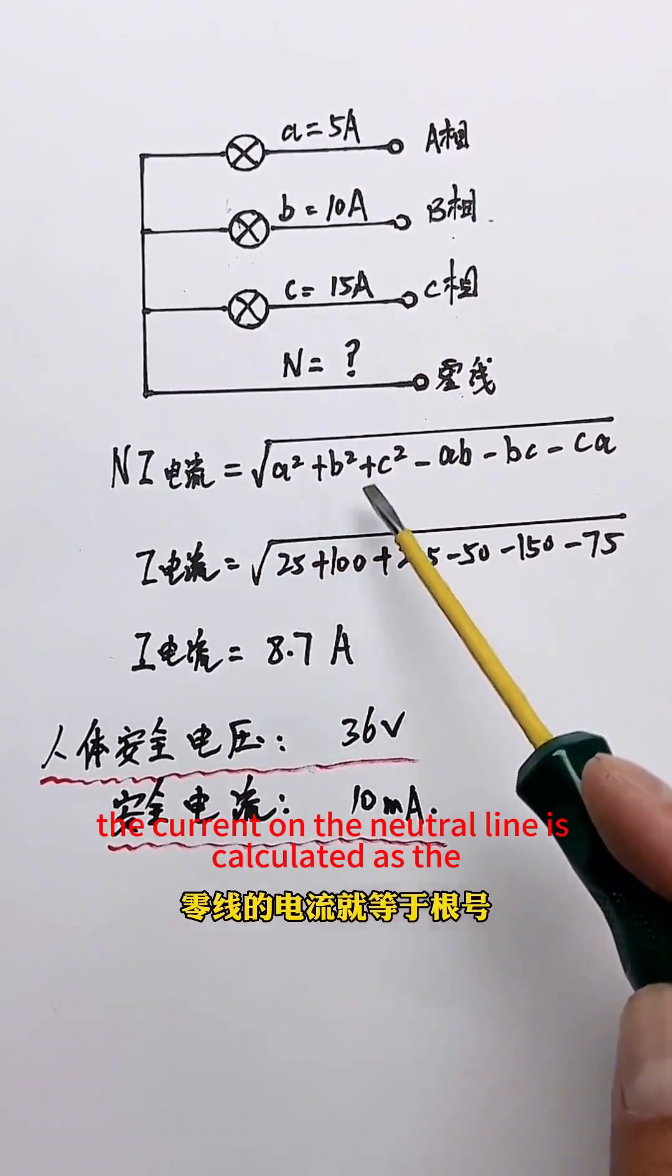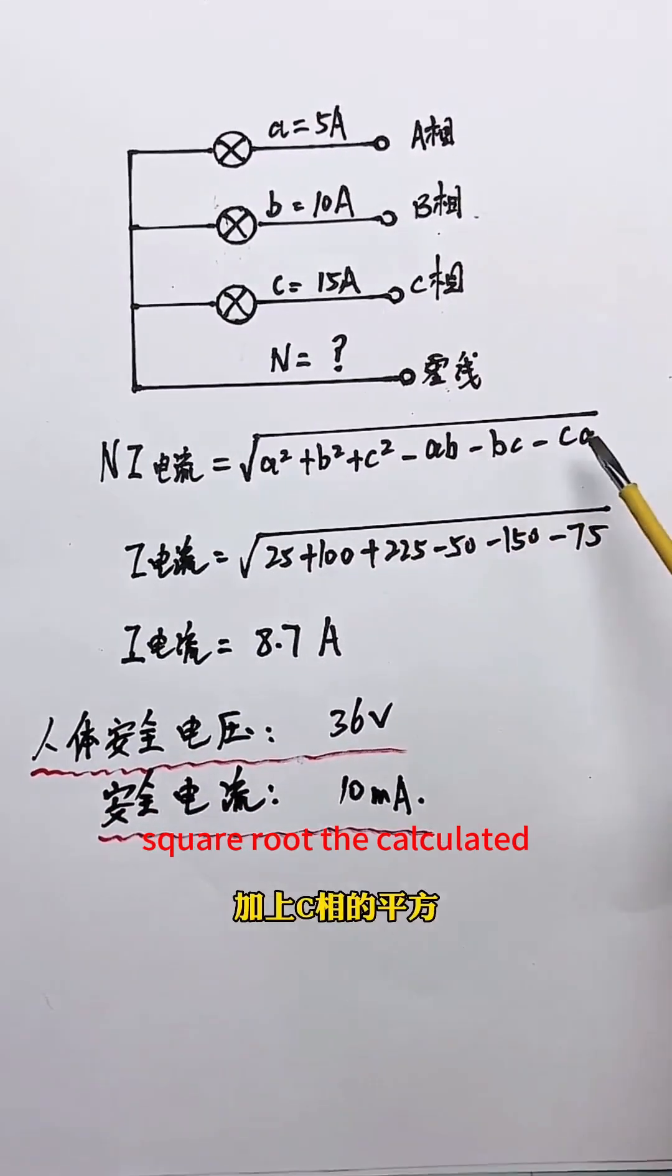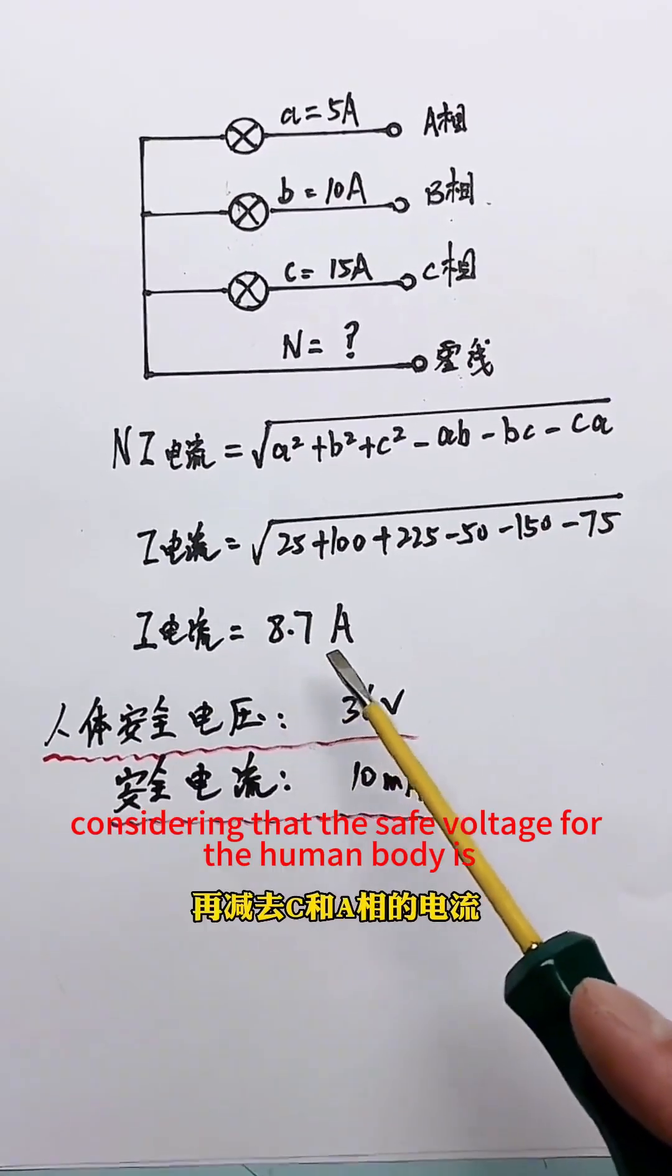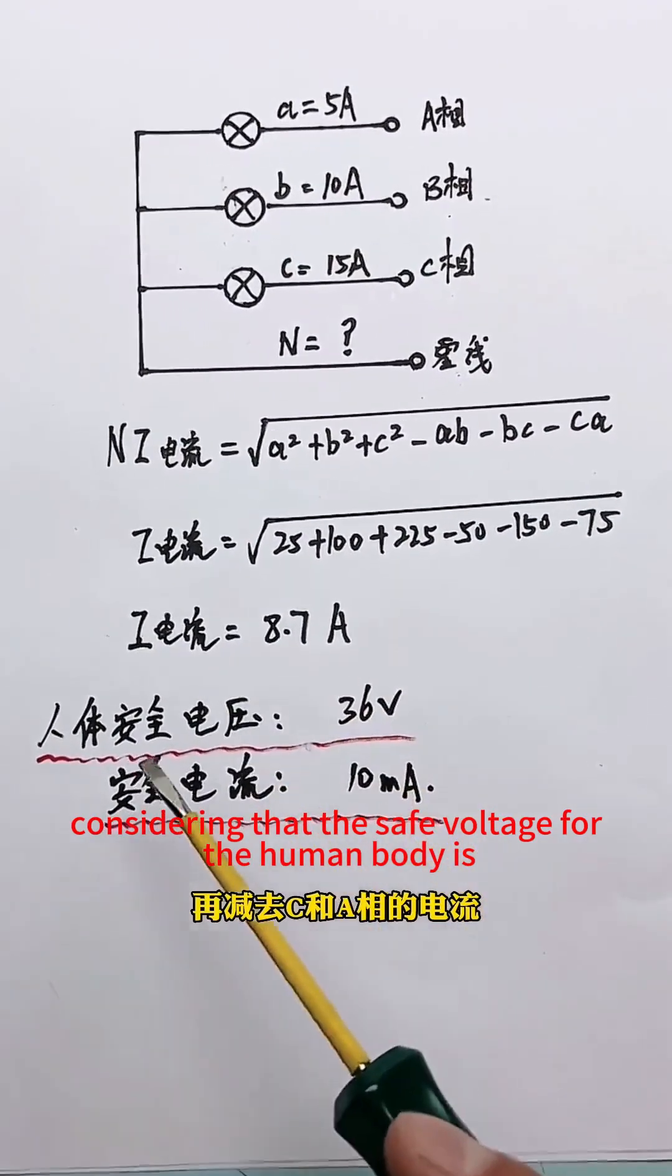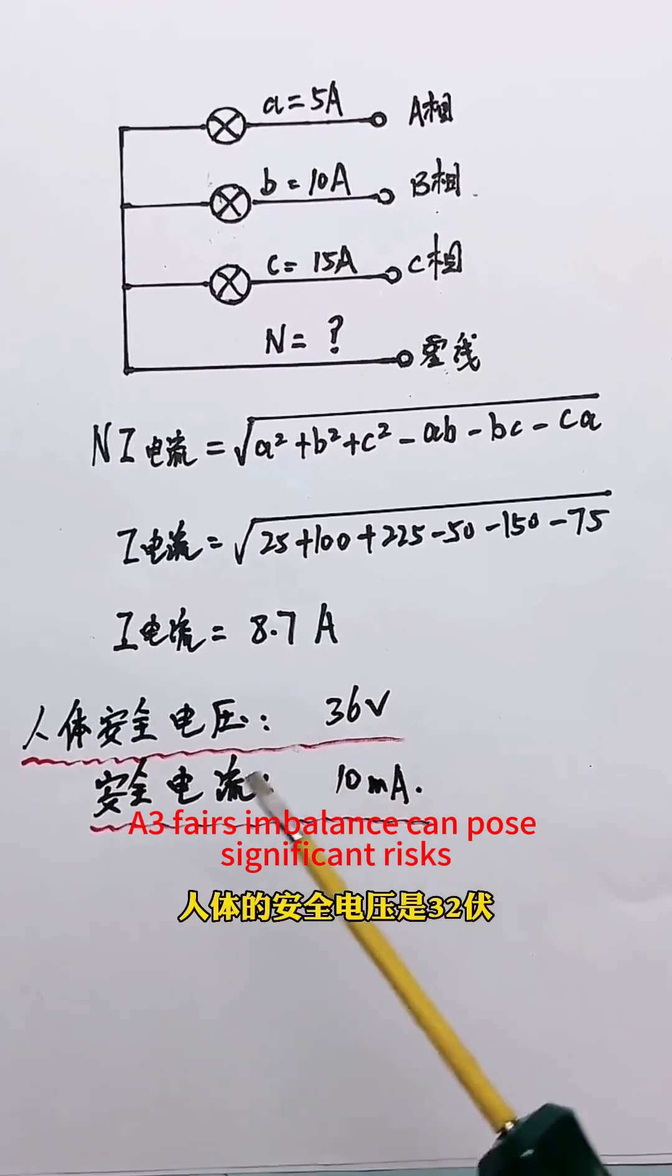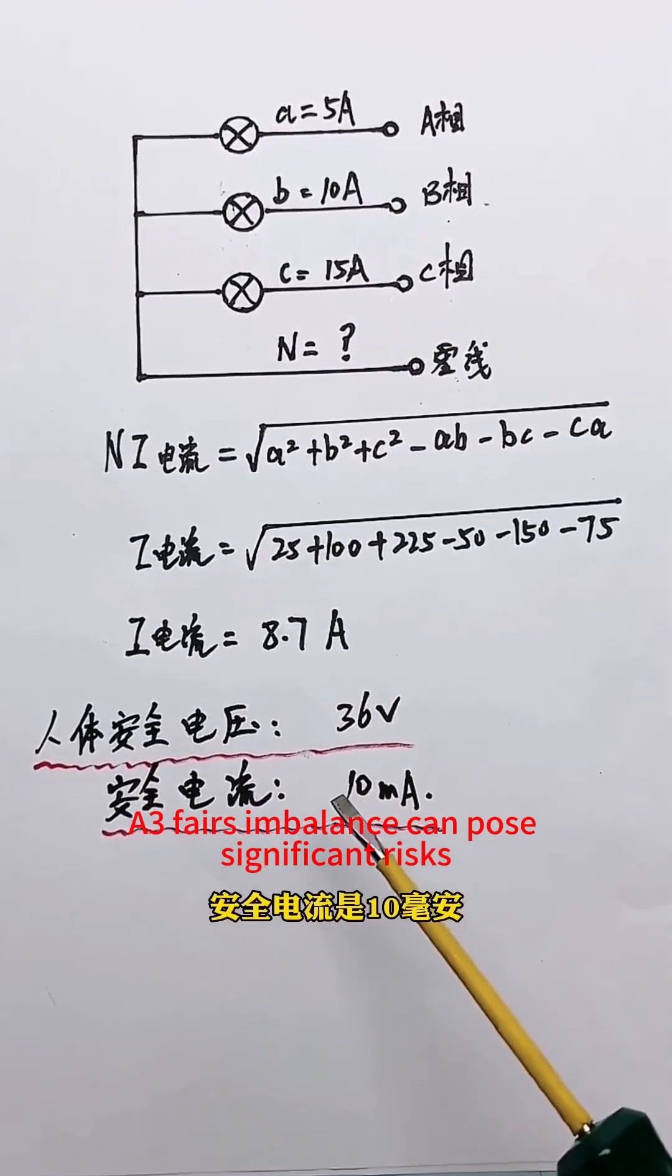The current on the neutral line is calculated as the square root. The calculated current on the neutral line is approximately 8.17A. Considering that the safe voltage for the human body is 36V and the safe current is 10mA, a three-phase imbalance can pose significant risks.